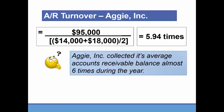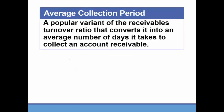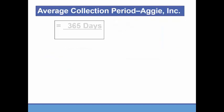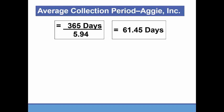This tells managers that Aggie collected its average accounts receivable balance almost six times during the year, which equates to about every two months. We can also convert the accounts receivable turnover into the number of days — called the average collection period — to make it easier to interpret. The formula is 365 days divided by the accounts receivable turnover: 365 divided by 5.94 gives us 61.45 days.